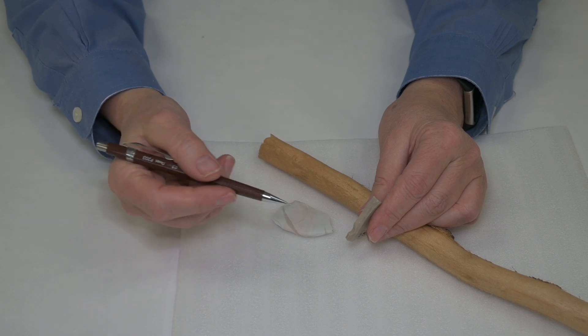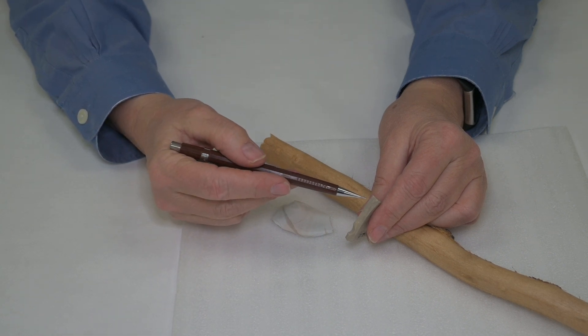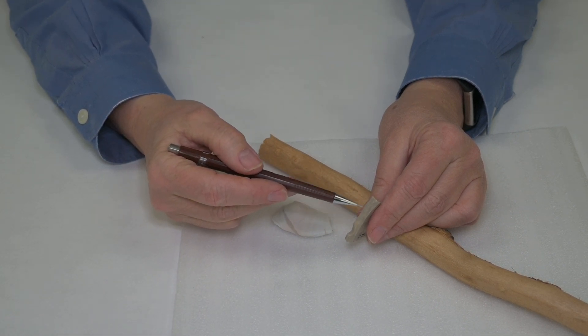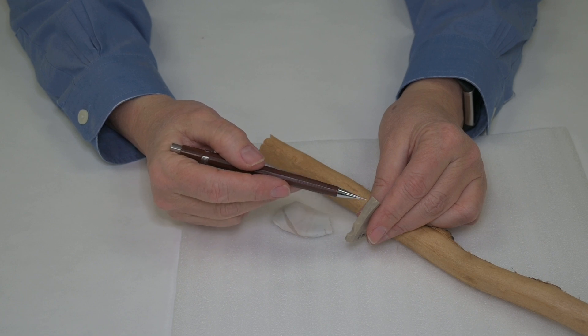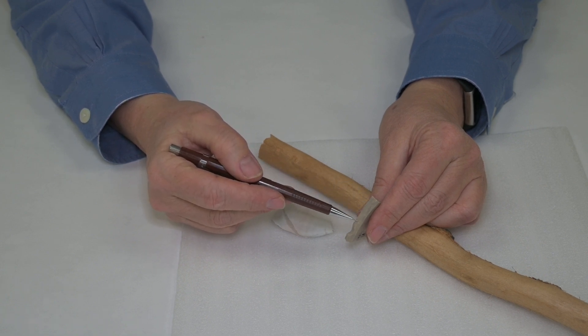A burin is an interesting artifact that is made on a flake and it's used to work wood or bone or something like that. And there's a split edge on the flake.